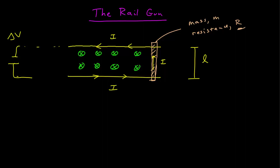So the bar rests on the rails, and when a current flows through the bar, there will be a force on the bar which will accelerate it along the rails. To get an idea, let's do a specific example.